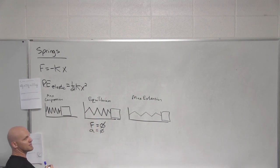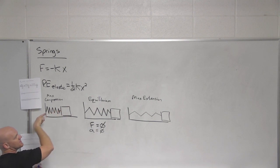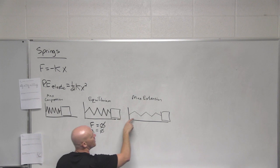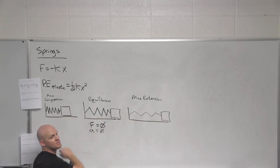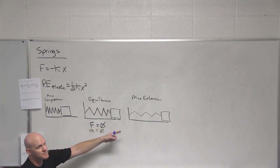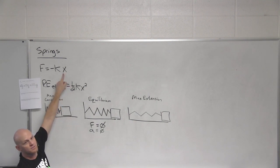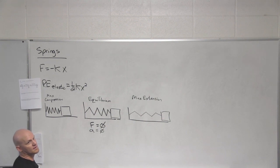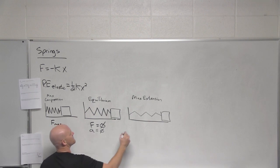If you look at where this thing is maximally compressed — say I compress this spring and let it go — it's going to spring through, pass through the equilibrium position, and keep going until it's maximally extended. Then it's going to snap back and just go back and forth. So the points of maximum compression and maximum extension are also the points of maximum displacement, which means that's where you're at the maximum force as well.